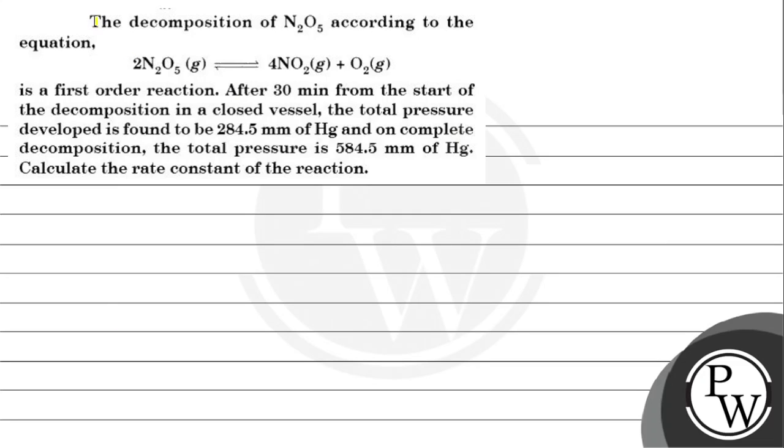Hello, let's see this question for you. The decomposition of N2O5 according to the equation 2N2O5 gaseous gives 4NO2 gaseous plus O2 gaseous is a first-order reaction. After 30 minutes from the start of the decomposition in a closed vessel, the total pressure developed is found to be 284.5 mm of Hg, and on complete decomposition, the total pressure is 584.5 mm of Hg. Calculate the rate constant of the reaction.